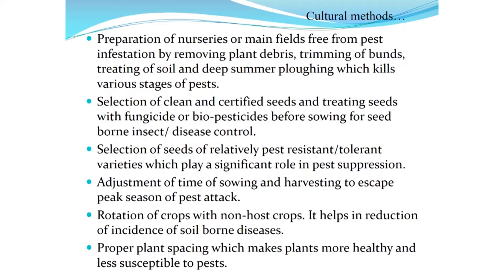Starting from preparation of nurseries or the main field, the farmer must be meticulous: debris must be cleaned, and periodical summer ploughing must be done, which kills various stages of insect pests. These insects — present in the ground in a diapause or dormancy stage — are brought outside and killed by scorching sunlight as well as by naturally occurring predators.